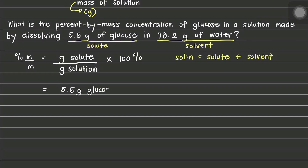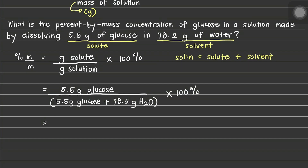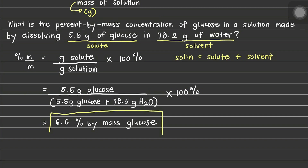Afterwards, we are going to substitute our given into our formula or equation. Using a scientific calculator, you can plug in all your data into the equation and press equal. Our final answer is 6.6% by mass glucose. If you will notice, we have two significant figures for our final answer.